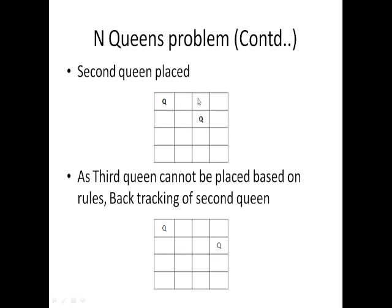We are going to place the 2nd queen in this position. The rules must be followed: no queen in the same rows, columns, or diagonals. The rows are blocked by the 1st queen, and the rows and diagonal values are blocked by the 2nd queen. So all cell values are blocked by the 1st and 2nd queens, meaning the 3rd queen cannot be placed. We go 1 step backward.